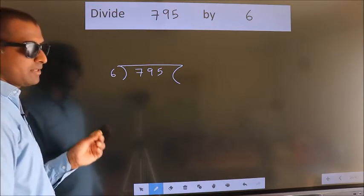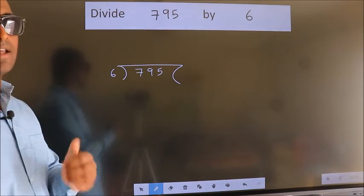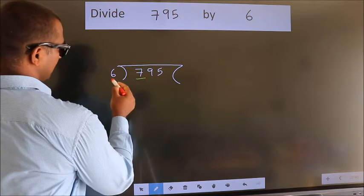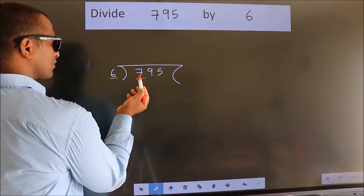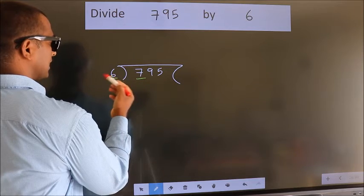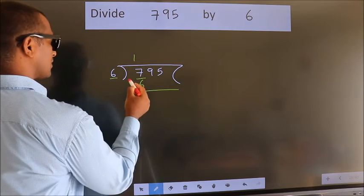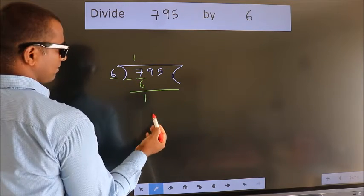This is your step 1. Next, here we have 7, here 6. A number close to 7 in 6 table is 6 ones, 6. Now we should subtract. We get 1.